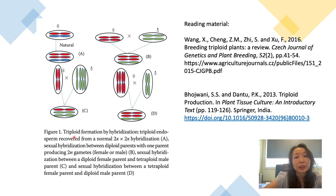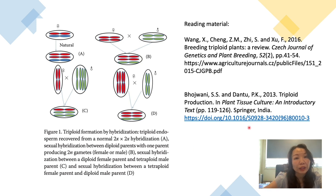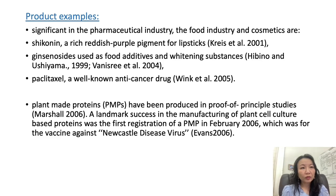Triploid formation by hybridization — triploid endosperm can be recovered from merging different diploid parents. There are four types of diploid formations shown here, and further reading is provided in the referenced materials.